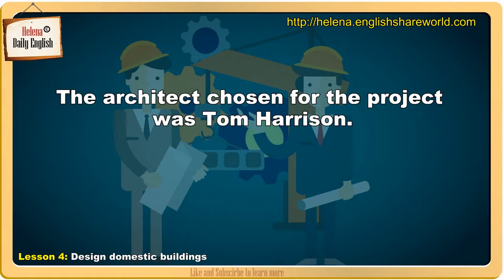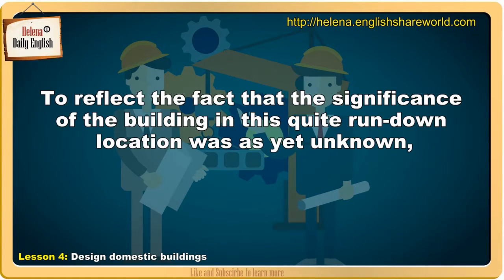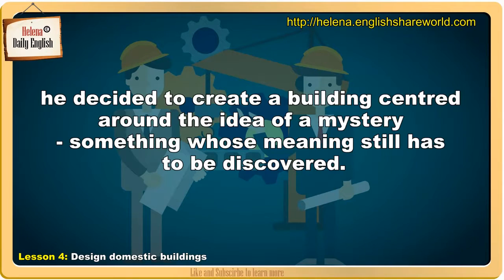The architect chosen for the project was Tom Harrison. He found the main design challenge was the location of the site in an area that had no neighbouring buildings of any importance. To reflect the fact that the significance of the building in this quite run-down location was as yet unknown, he decided to create a building centred around the idea of a mystery — something whose meaning still has to be discovered.